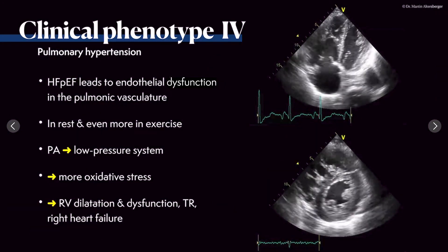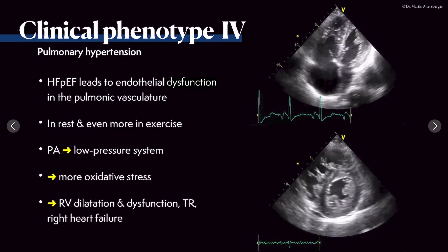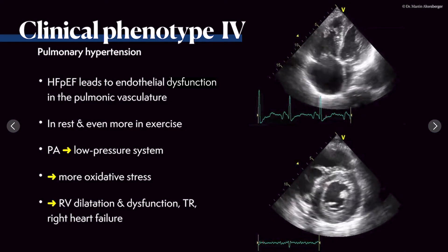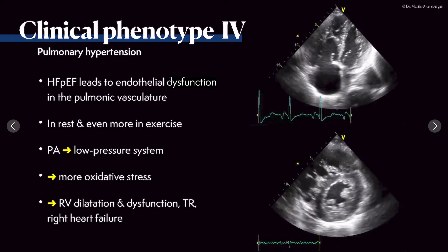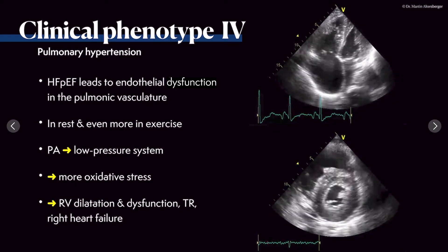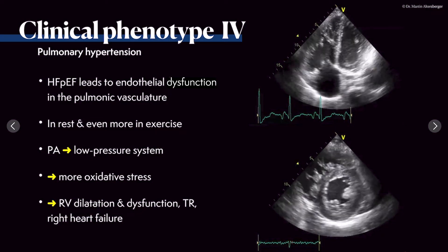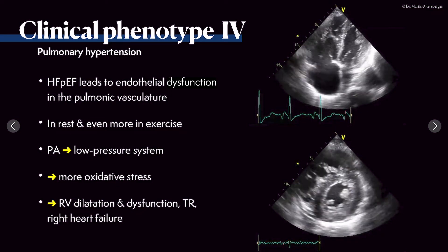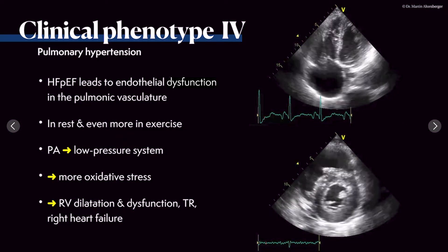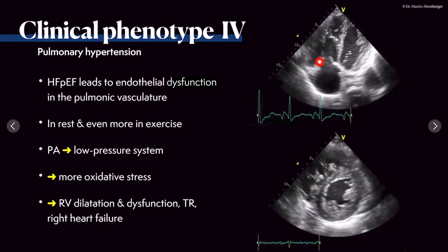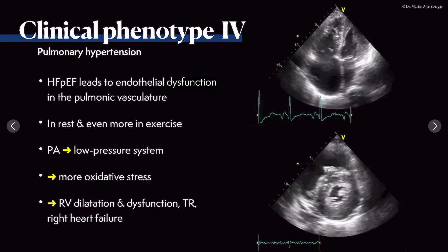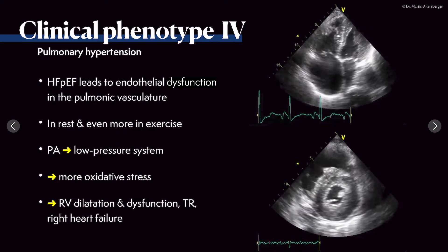The next clinical phenotype we have to talk about is pulmonary hypertension. In pulmonary hypertension, heart failure with preserved ejection fraction leads to endothelial dysfunction in the pulmonic vasculature — a problem already present at rest but even more so during exercise. The pulmonary artery, normally a low-pressure system, is subjected to more oxidative stress. This leads to RV dilatation and right ventricular dysfunction, which creates a secondary tricuspid regurgitation that causes the right ventricle to fail even further — again a vicious circle of RV dilatation, reduced function, tricuspid valve coaptation defect, and TR leading to further deterioration.